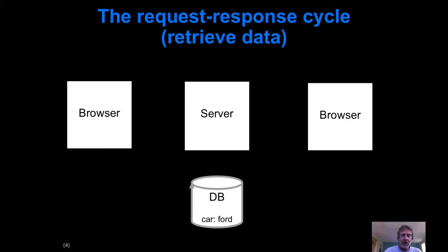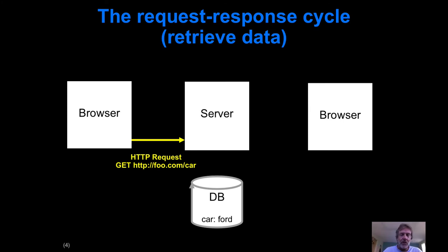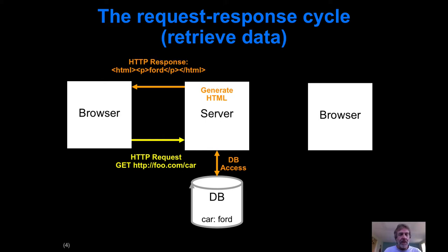In case you don't understand the request-response cycle, let me quickly show you some animations to give you the vibe of it. We start off with a server that has a database and a couple of browsers. The way it works at a high level: the browser issues a request — they type in http://foo.com into their browser and hit return. That creates a GET request for the server, which accesses the database, generates some HTML, and returns that HTML to the browser, which then displays it.